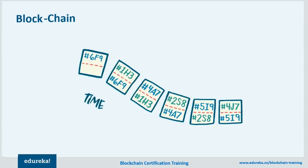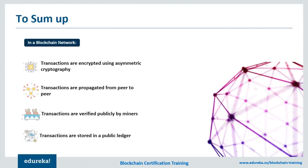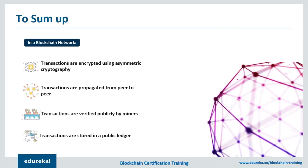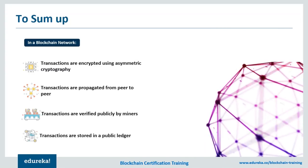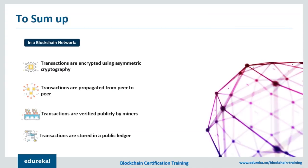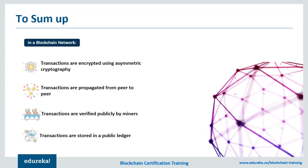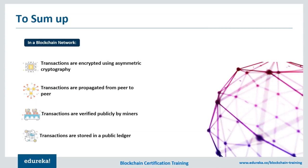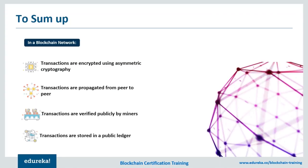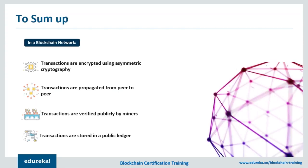Let's sum up what we learned about blockchain through its transactions. First, digital signatures are created for every blockchain transaction using asymmetric cryptography. These transactions, once encrypted and secured, are broadcast publicly over the network. Next, these transactions are verified and validated by miners who use a consensus algorithm as a basis of their trust. Lastly, once validated, these transactions are stored on a public ledger which can be queried by anyone by just looking up the block hash.